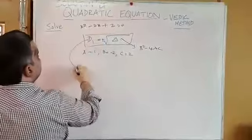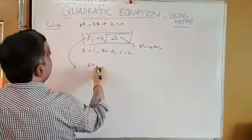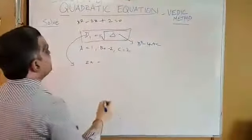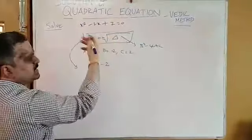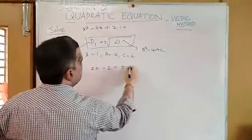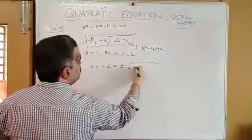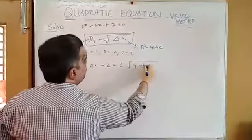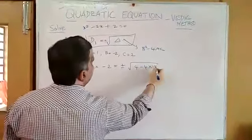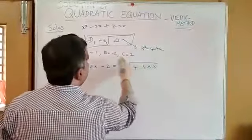Differentiation. D1: differentiation of x square, 2x. Differentiation of 2x: 2. Number constant: 0. Is equal to plus or minus b square. 2 square, minus 2 square, 4 into 1 into b square: 4. 4 into a: 1.